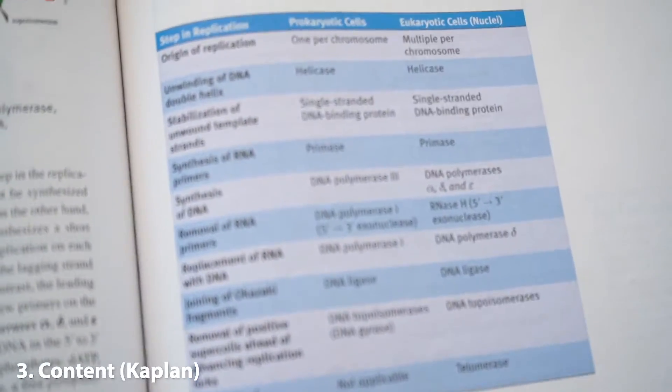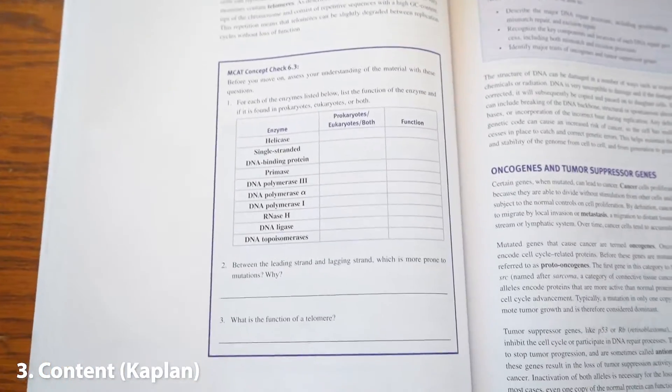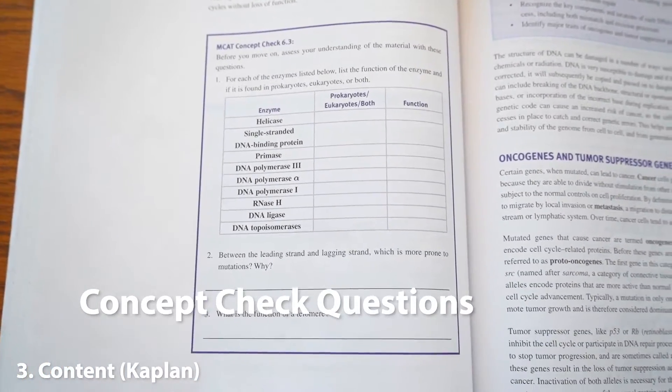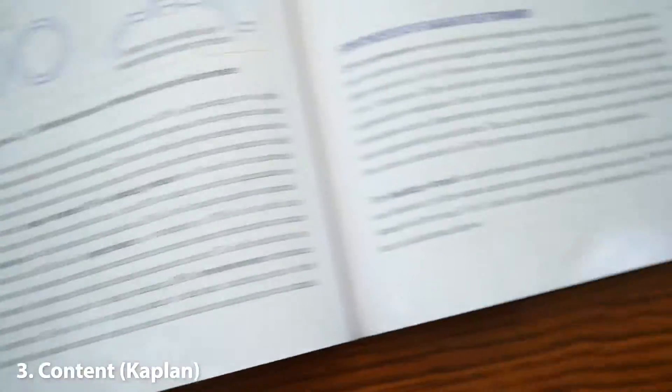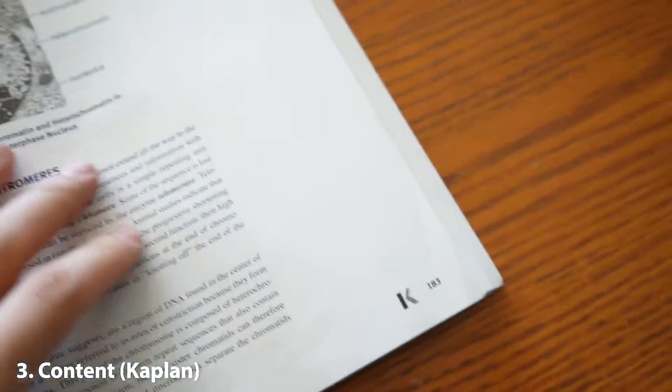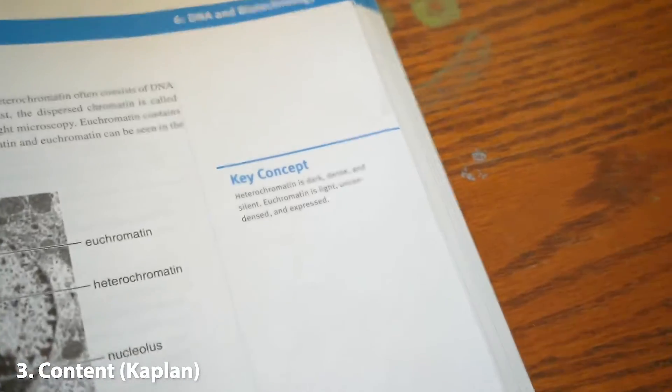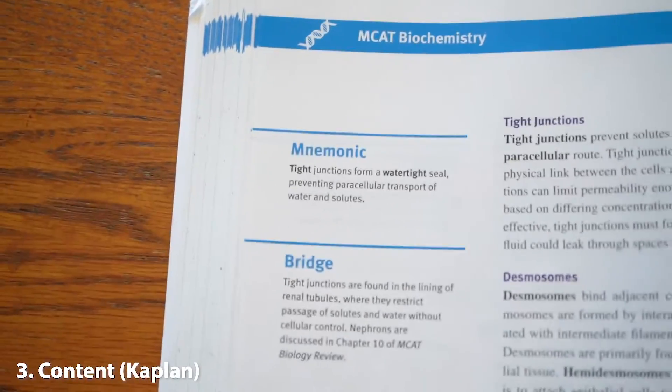Just a very good summary of everything. Another thing Kaplan does is it gives you key concepts as you're reading. Sometimes you can also get mnemonics for specific chapters. This is an example of a mnemonic they have.